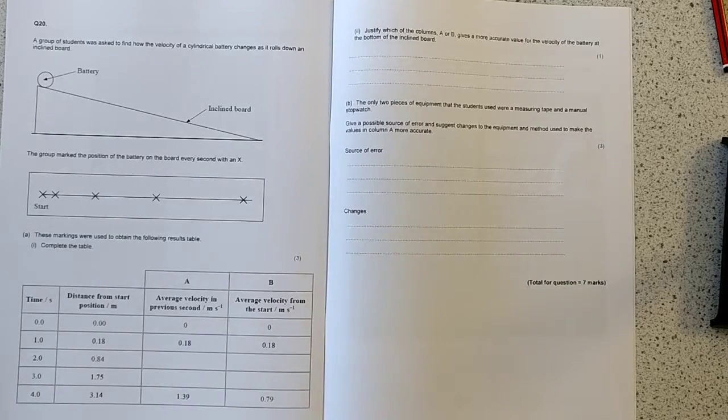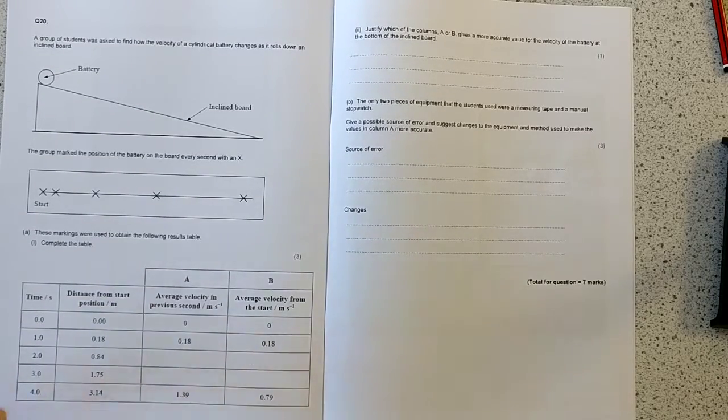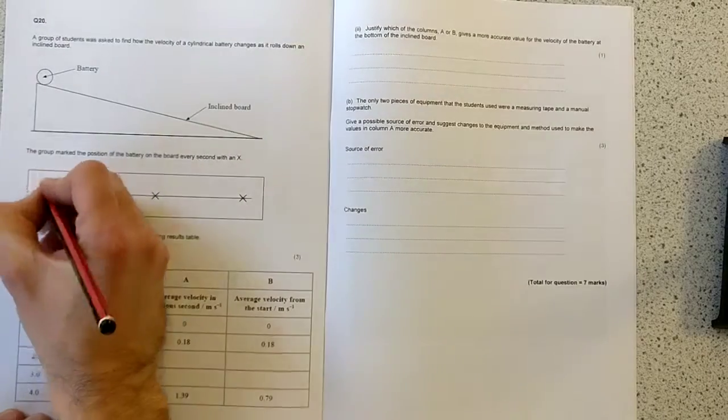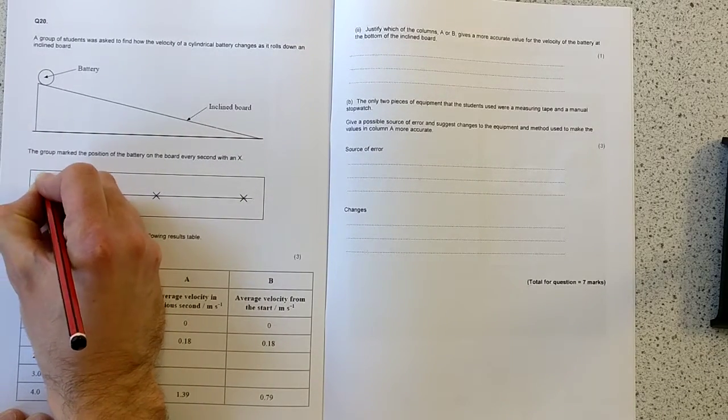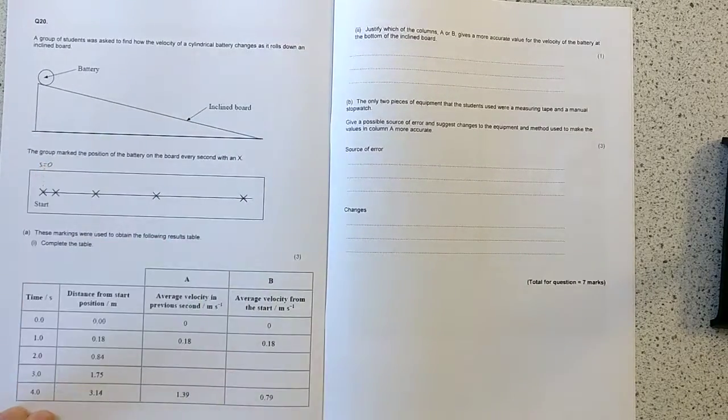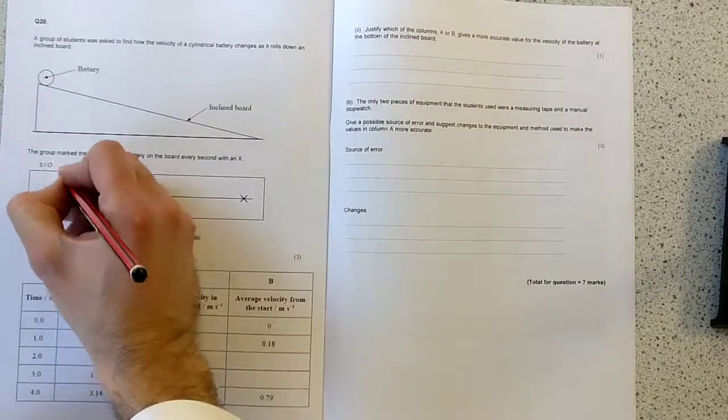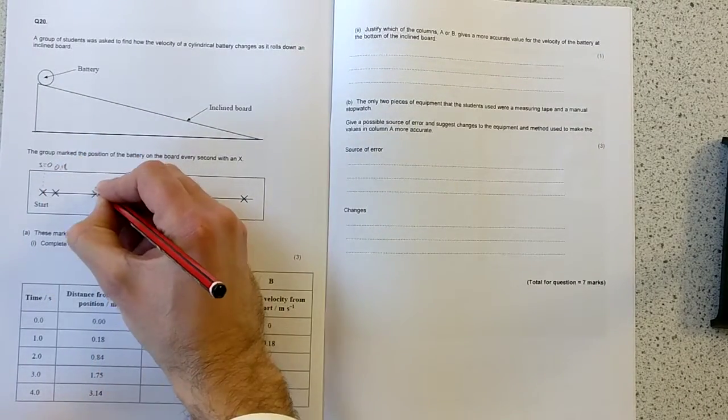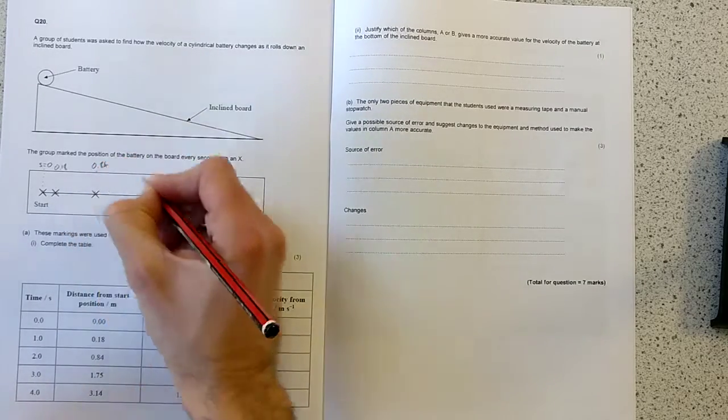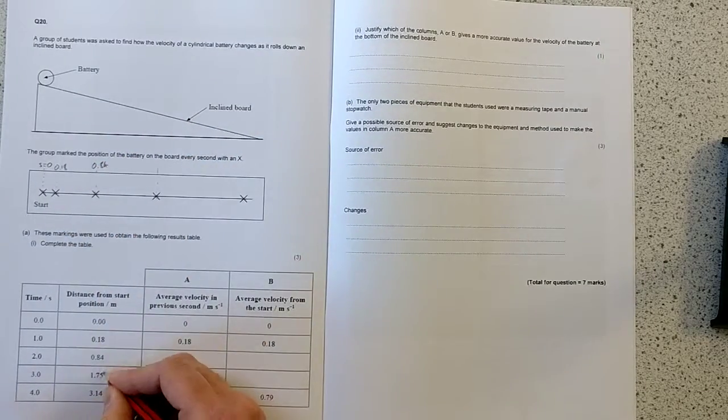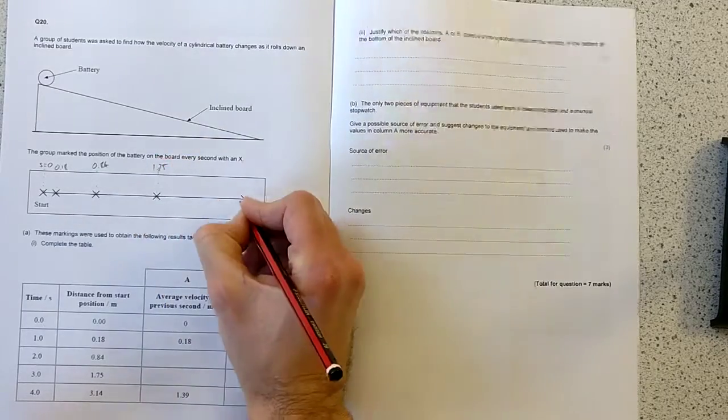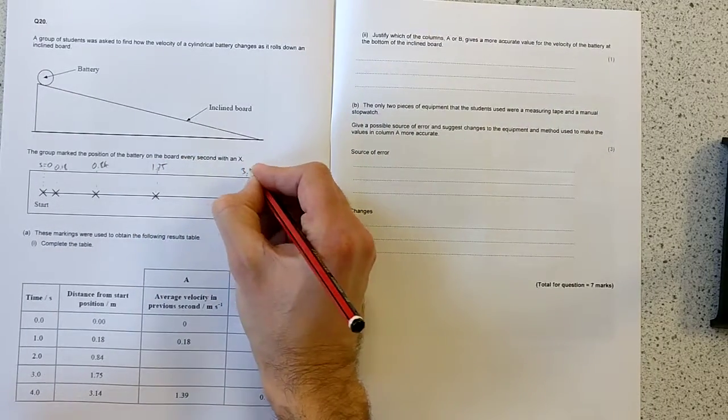So, let's read the table. We've got time, and we've got distance from the starting position. So, if this was my starting position, my S equals 0, then this one here is 0.18, this one here is 0.84, this one here is 1.75, and this one here is 3.14.